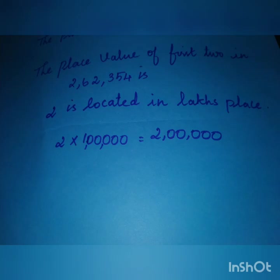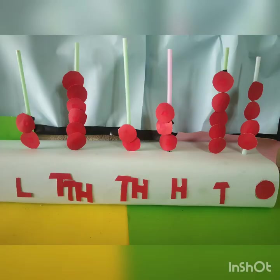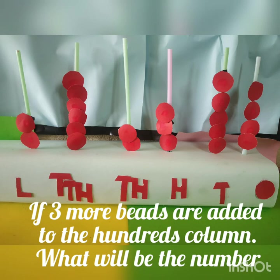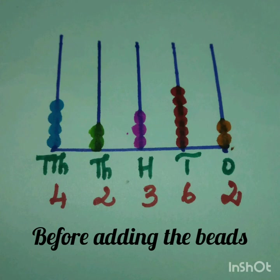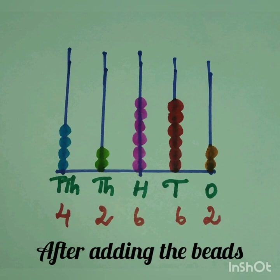In this Abacus, the beads are already arranged. We have to find what the number will be if we add 3 more beads to the 100s column. Before adding the beads, the number is 42,362. After adding 3 beads to the 100s place, there will be 6 beads in total. So the answer will be 42,662.